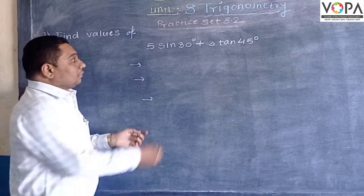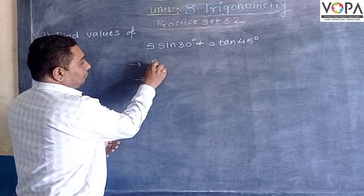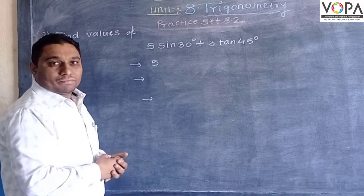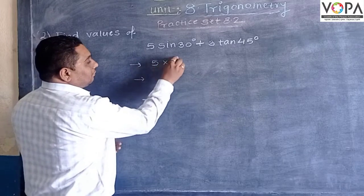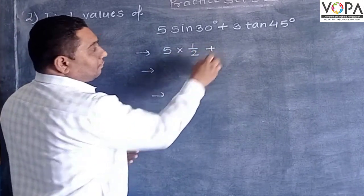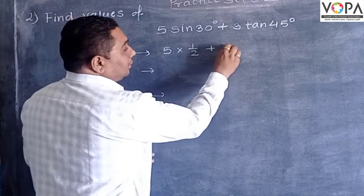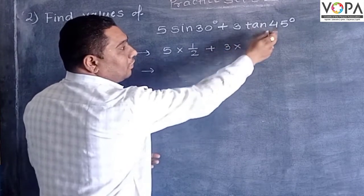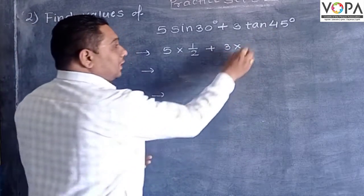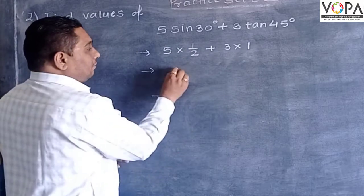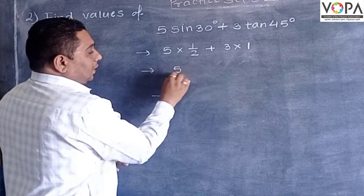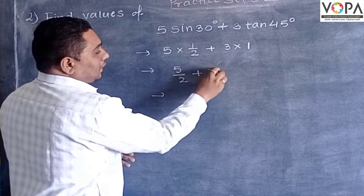So let us see. 5 sin of 30 degree, the value of sin of 30 degree we know is equal to 1 upon 2. Now, 3 into value of tan 45 degree is equal to 1. So therefore, 5 upon 2 plus 3.